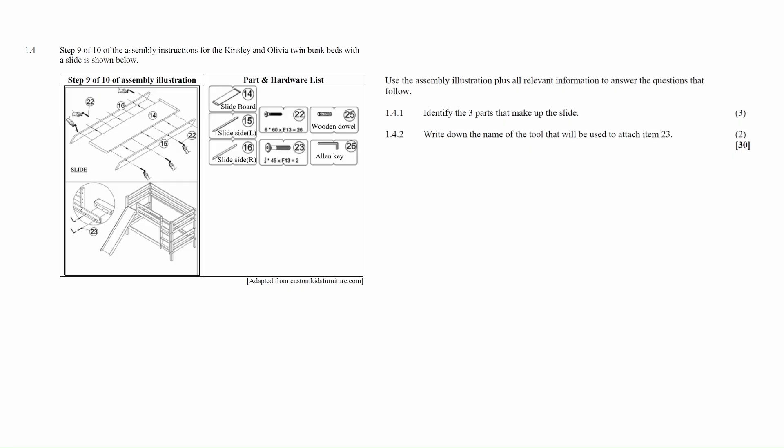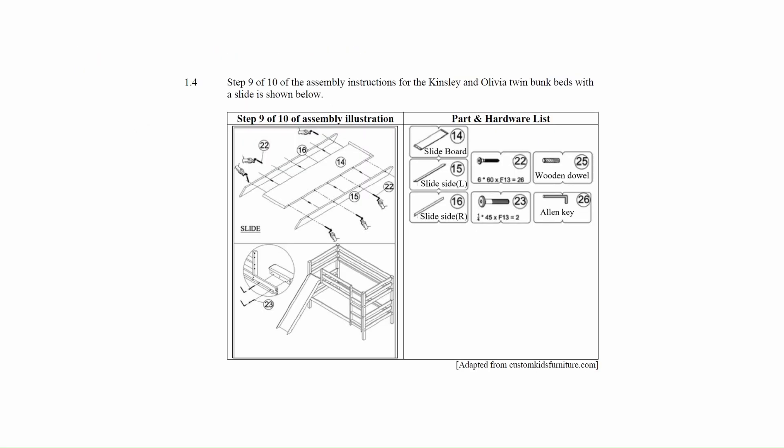Question 4.1 consists of two maps and plans questions designed to assess your understanding of assembly diagrams. You are given a diagram showing step 9 of 10 of the assembly instructions for the Kingsley and Oliver twin bunk beds with a slide, alongside the parts and hardware list for the Kingsley and Oliver twin bunk beds.